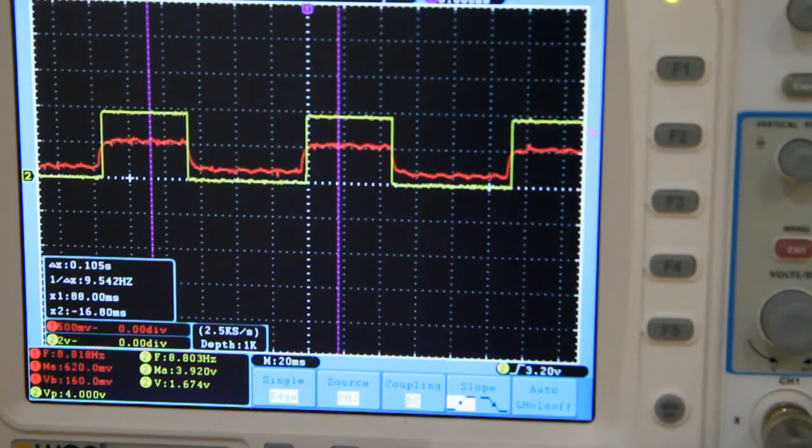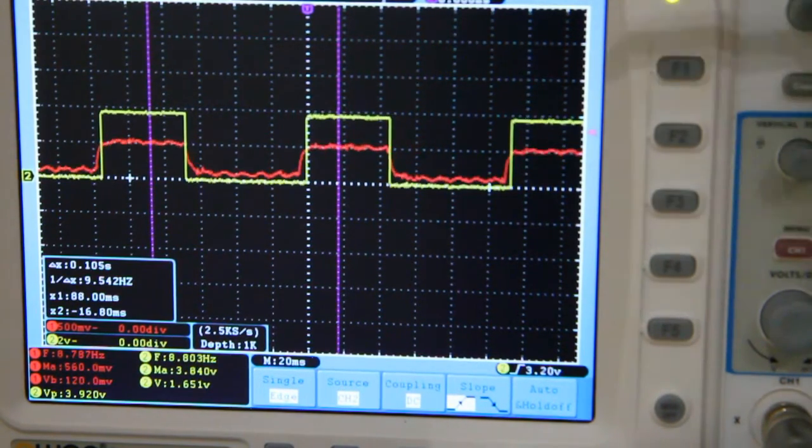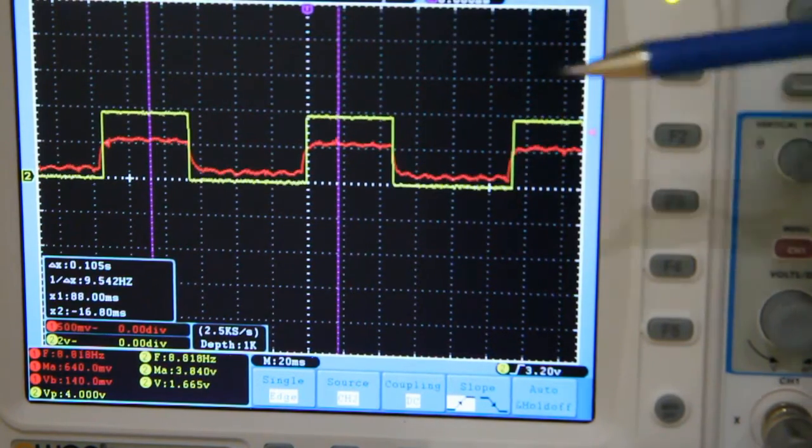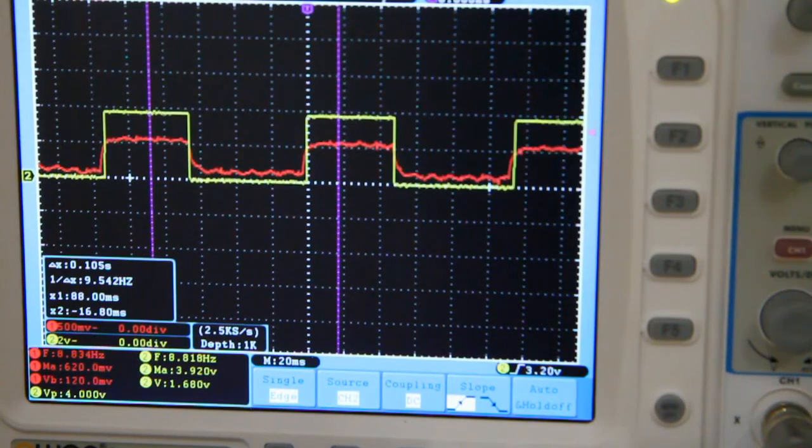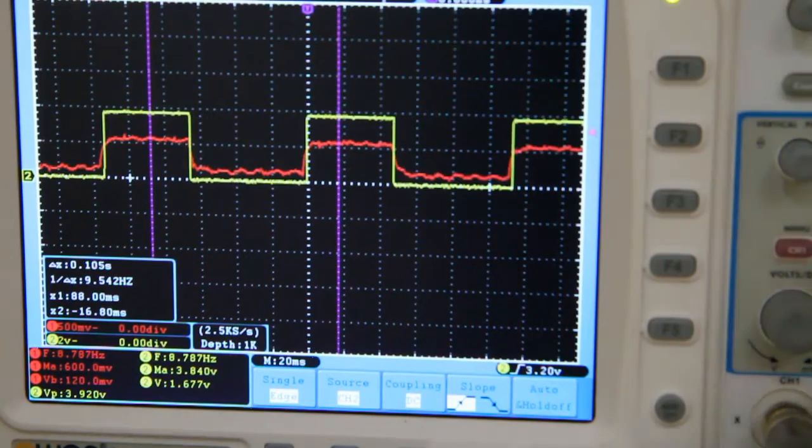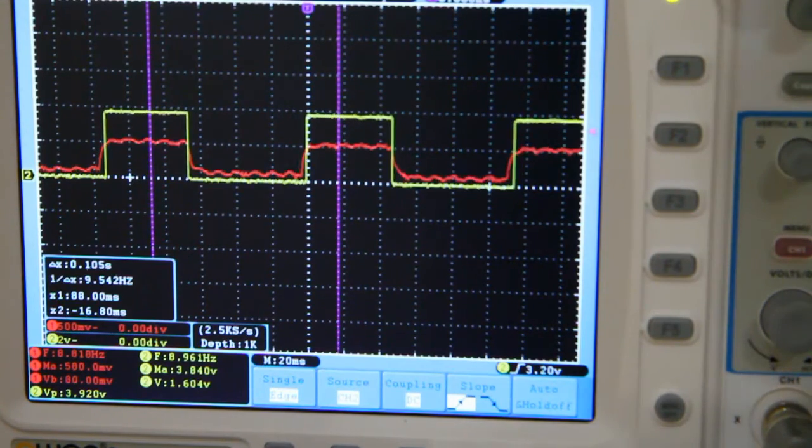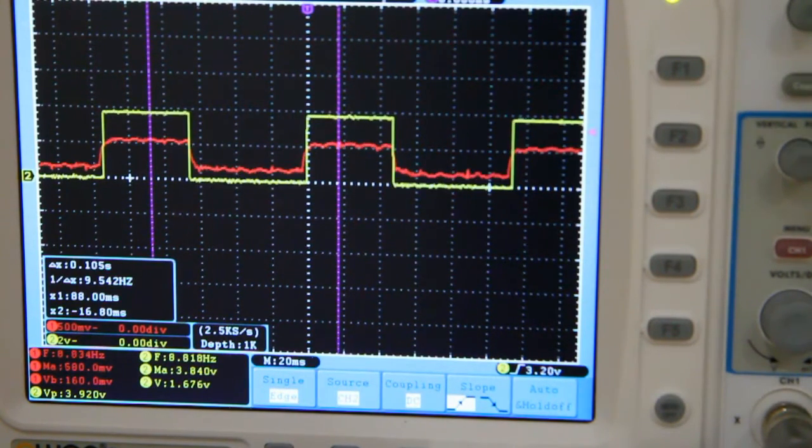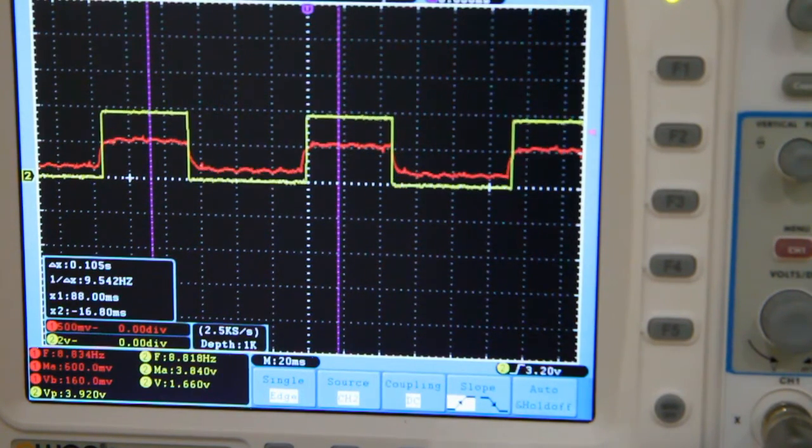Here we can look at it on my scope—a Chinese scope I got for Christmas a couple years ago. We've got two channels on screen. The red channel is coming from the output of the decoupling cap, the signal that's detected and fed into the op-amp. The yellow trace is the output of the op-amp, giving a nice clean 4-volt signal, which I'll feed into an Arduino to do the timing.